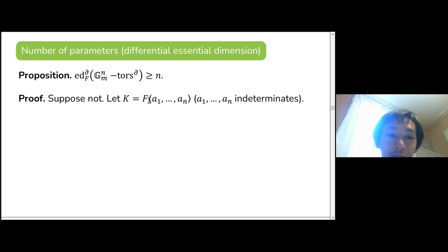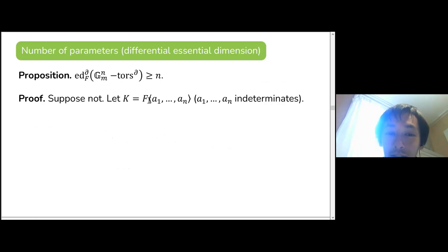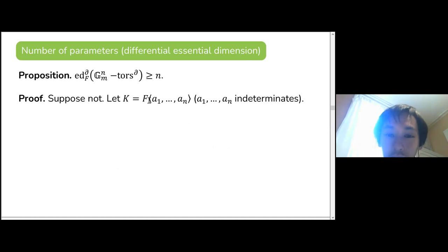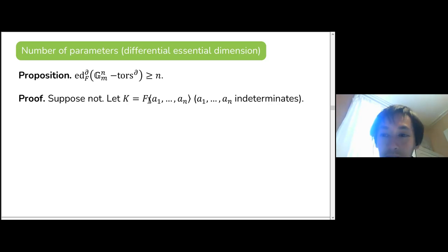The intuition for G_m^n is that, just as Kummer extensions and Artin-Schreier extensions are well understood in Galois theory, G_m^n and G_a^n Picard-Vessiot extensions are well understood in differential algebra. This allows us to explicitly write down that they need N parameters.